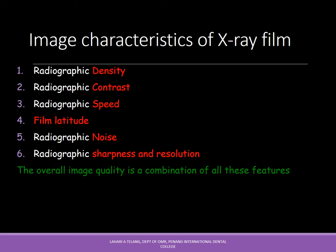Characteristics of an x-ray film image include radiographic density, contrast, speed, film latitude, radiographic noise, sharpness, and resolution. The overall image quality is a combination of all of these features.